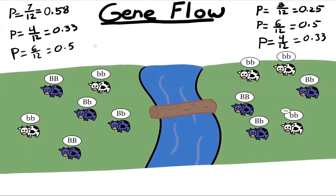The question is: can we predict what that equilibrium number is? Yes, we can. If the cows were allowed to migrate indefinitely — freely going back and forth as many times as they want — it's almost like they don't have two different populations anymore; it's one giant population. Pretending this is one giant population, there are 10 dominant alleles out of 24 alleles total, meaning we end up with a dominant allelic frequency of 0.417. We call this our equilibrium value.